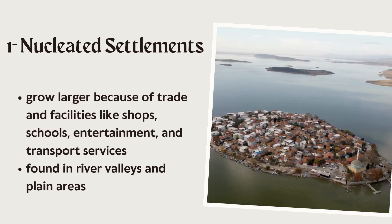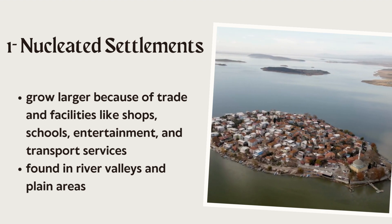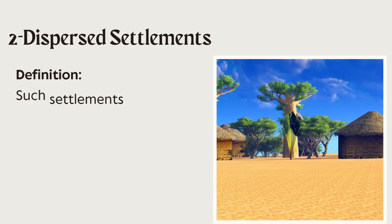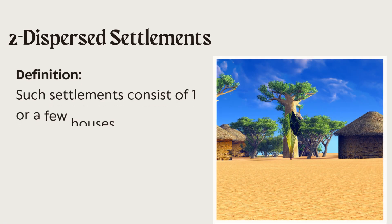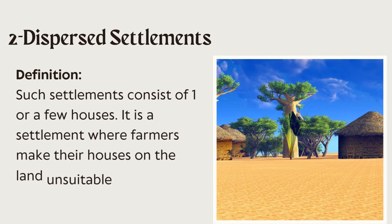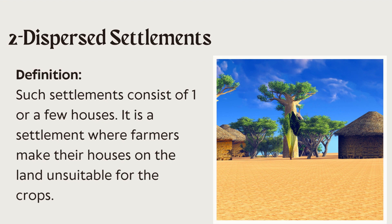Such type of settlements are also found in river valleys and plain areas. The second type of settlement is dispersed settlement. Such settlements consist of one or a few houses — it's a settlement where farmers make their houses on land that is unsuitable for crops.